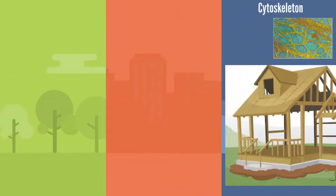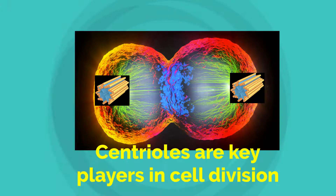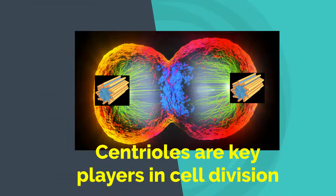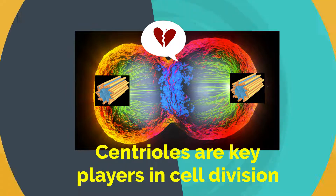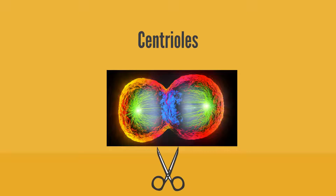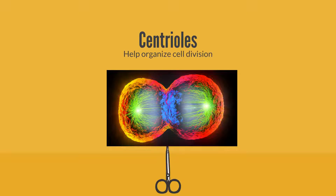Next, we have the cytoskeleton, which is the metal or wood framework that holds the city up. It is also used for transport and chemical signaling as well. And last, we have centrioles, which are two pipes that help Cell City split into two when it comes time for cell division.